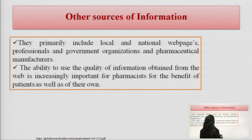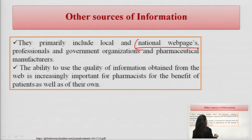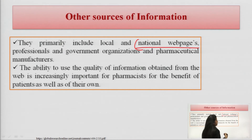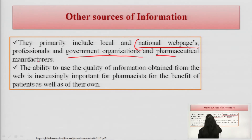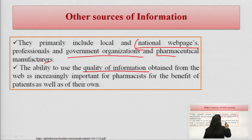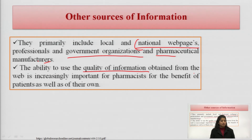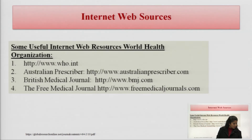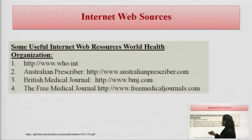Other sources of information include national web pages from which information regarding drugs or therapies can be taken. Healthcare professionals and common people take information from national web pages, government organizations, and pharmaceutical manufacturers. The ability to use and assess the quality of information obtained from the web is increasingly important. Reliable web pages will be discussed in later slides.